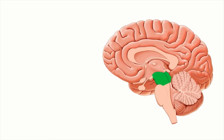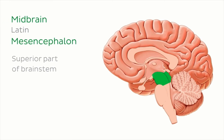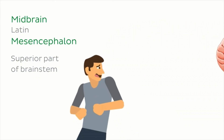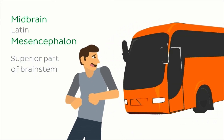The third and final and most superior part of the brainstem is the midbrain. It's here where integration of sensory input from the periphery and motor output from the cerebrum occurs. To put it simply, this is what tells you to move when there's a bus that's about to hit you.